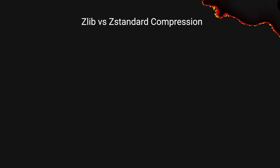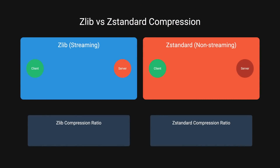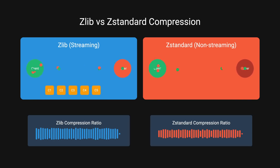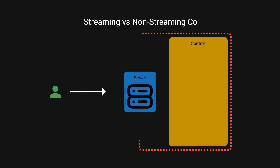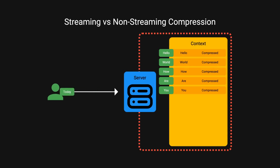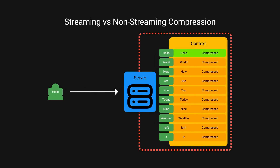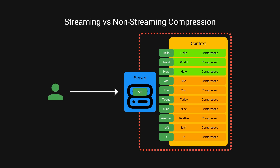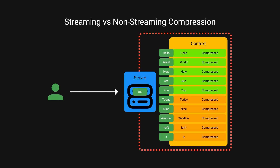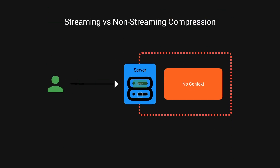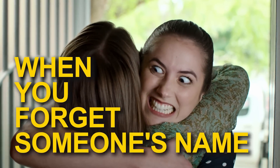The team realized that a key difference between their Zlib and ZStandard implementation was that Zlib was using streaming compression, while ZStandard wasn't. In streaming compression, the compressor maintains context across multiple messages, allowing it to optimize compression based on previously seen data. Without this, the compressor would have to start fresh with each message, losing valuable historical context — like me trying to recall someone's name when I meet them for the second time. Awkward.